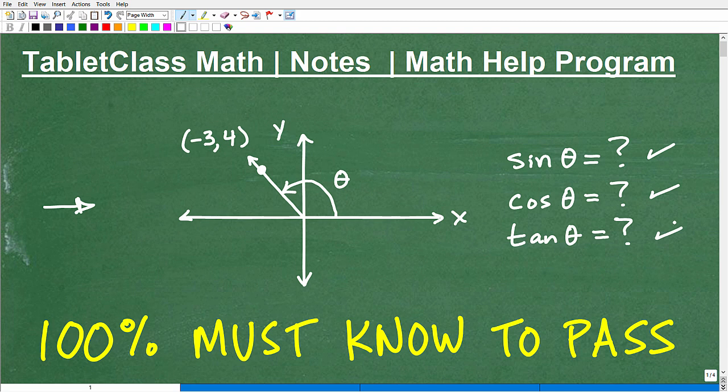Okay, now I'm not going to be looking for the actual angle measure right now. Of course, this is something else you need to know. What I just want to know is given this information, what is the sine, cosine, and tangent? So those of you that are studying trigonometry, like 100% of you must know how to do this to pass your course